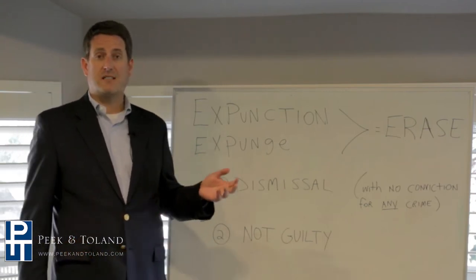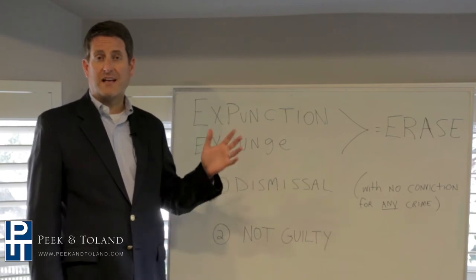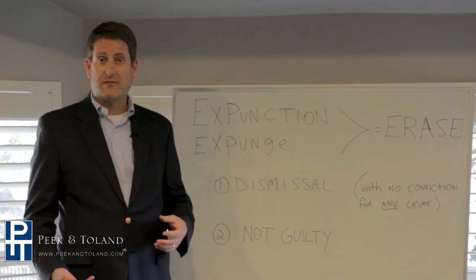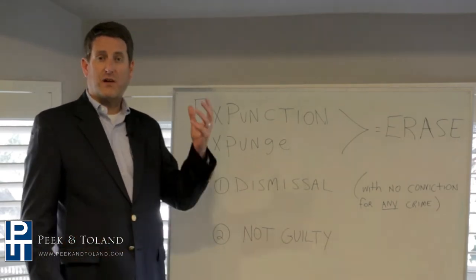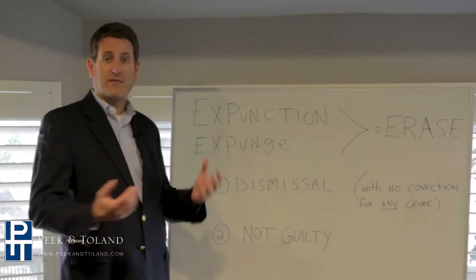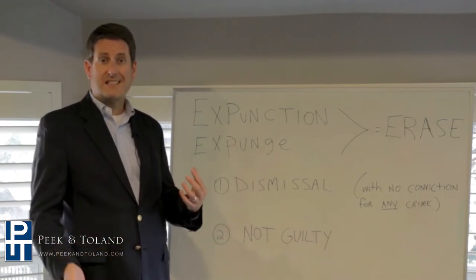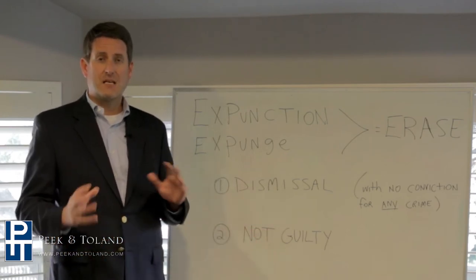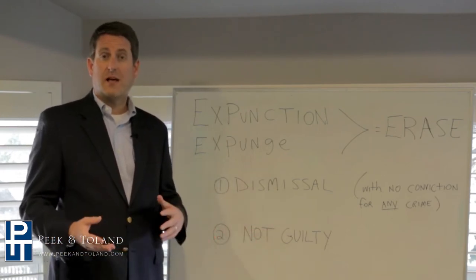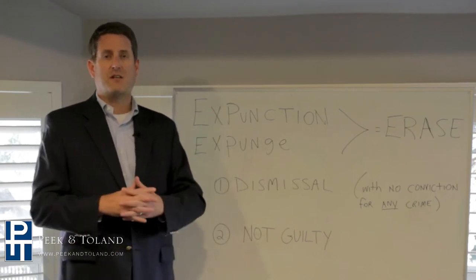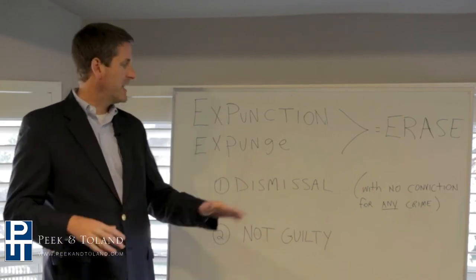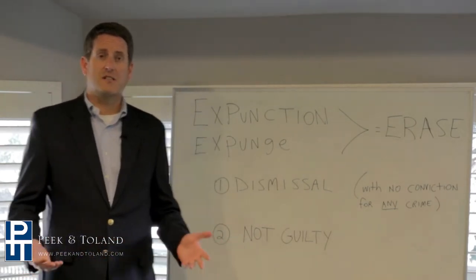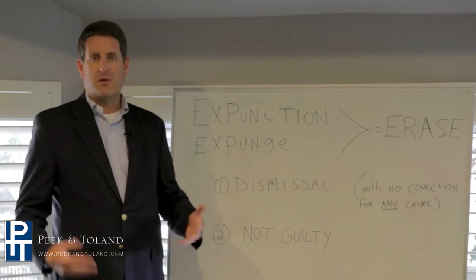Sometimes you find cases where somebody's charged with a misdemeanor or a felony and they drop it down to a different level and it's dismissed at that lower level. For instance, you have a felony dropped down to a misdemeanor, but then you get a deferred prosecution on the misdemeanor, or they drop it down to a Class C ticket and you get a deferred disposition on that Class C ticket that also ends in dismissal. In some of those cases, you could still be eligible to expunge it, so check with a lawyer. It has to be a straight dismissal. Also, if you go to trial before a jury or a judge and you're found not guilty, you're also eligible for expungement.